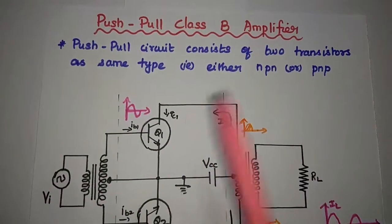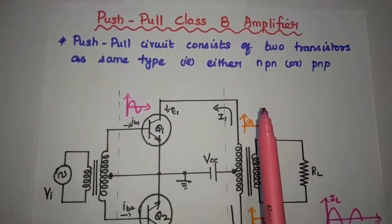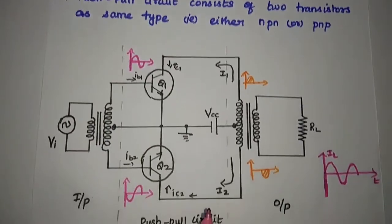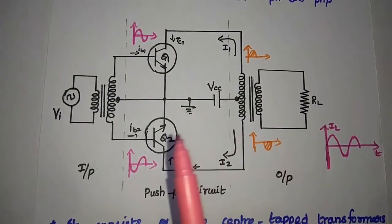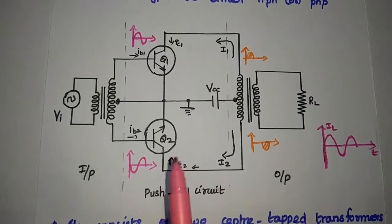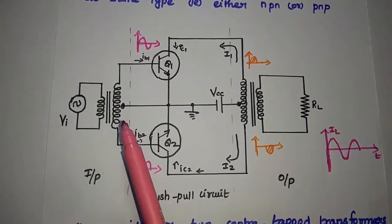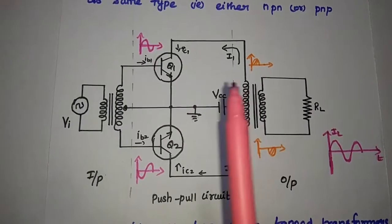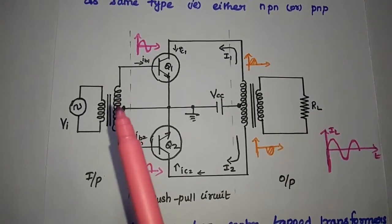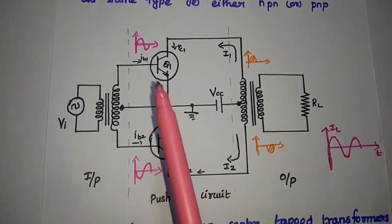In this amplifier, we are going to use two transistors of the same type — it can be either NPN or PNP type. This is the circuit diagram of the push-pull class B amplifier. In this, we are going to use two center-tapped transformers and two identical transistors. The first transformer is the input transformer, also known as the driver transformer. The second one is the output transformer. We give the input signal to the primary winding of this input transformer. Due to the center-tap, this transformer produces two signals 180 degrees out-of-phase with each other.